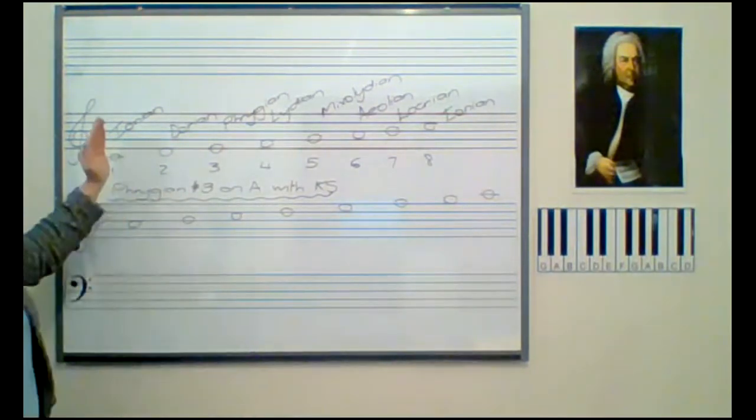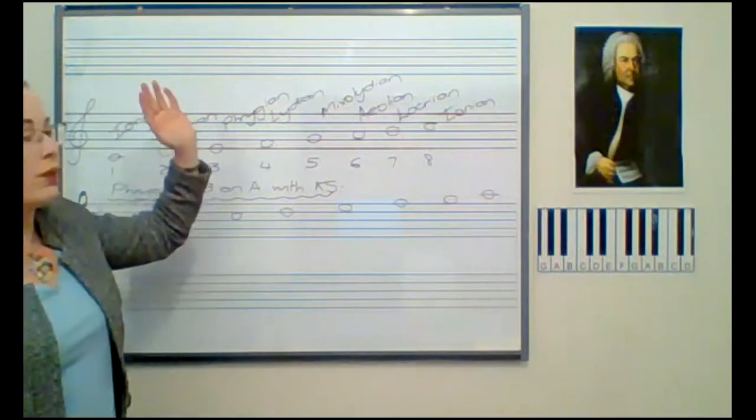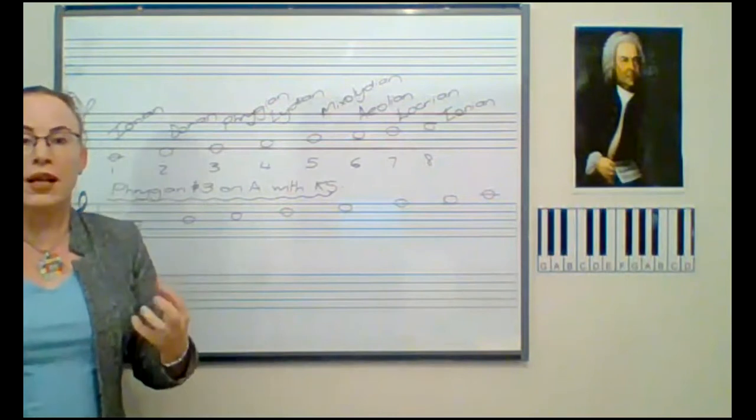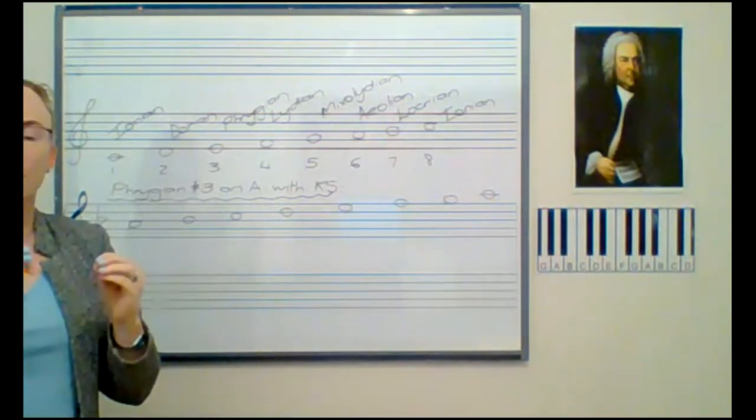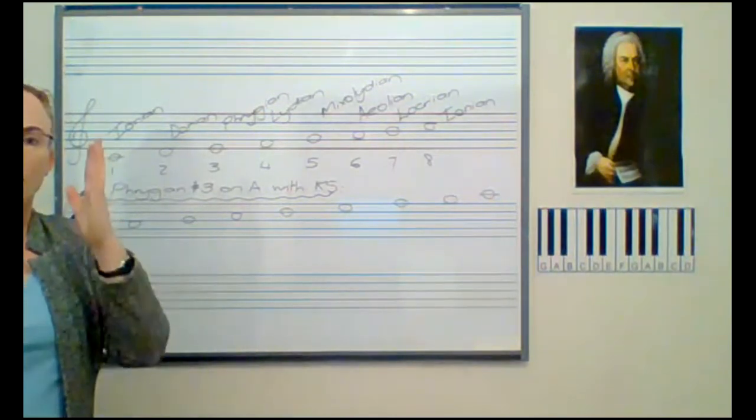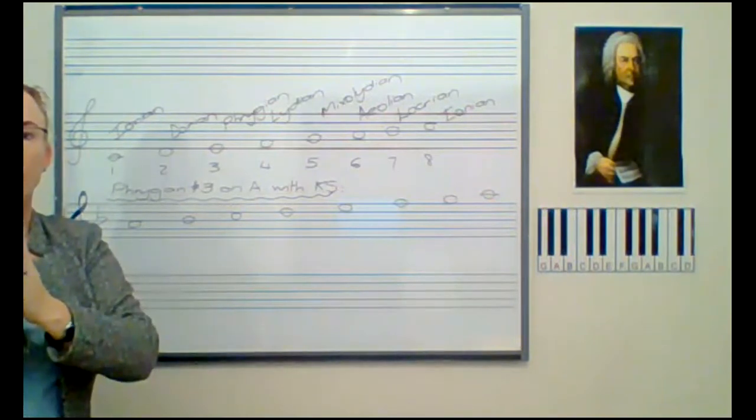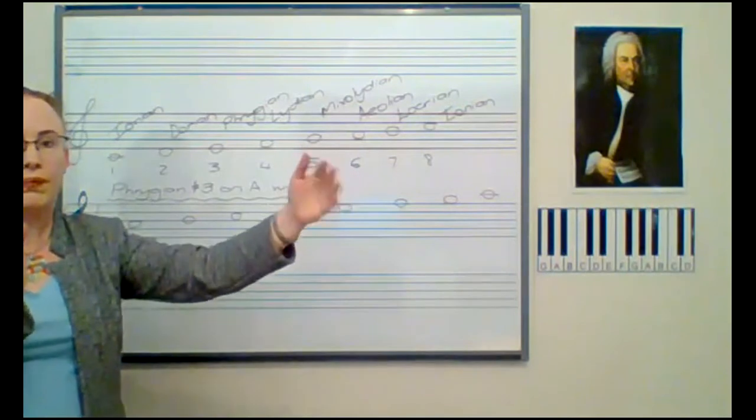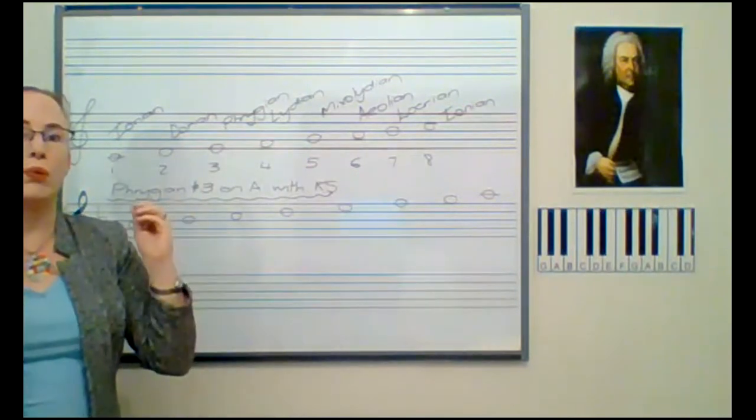Whenever you go from the second scale degree to the second scale degree, it's known as the Dorian mode. So it's really as good as to say you're starting on the supertonic of C major and you run to the next supertonic. That is how your modes work.